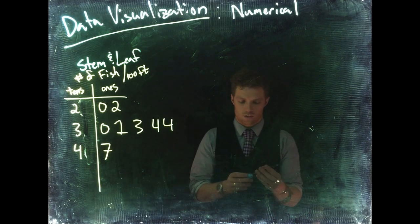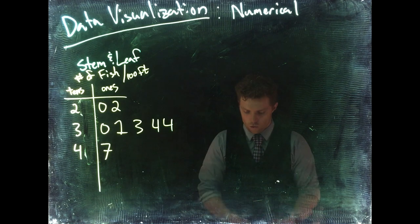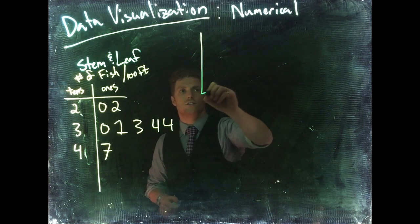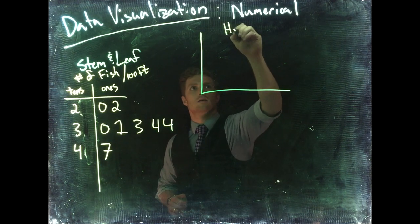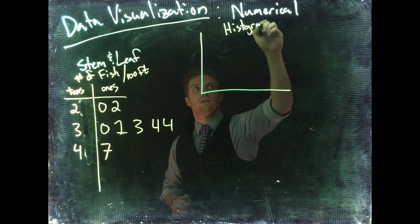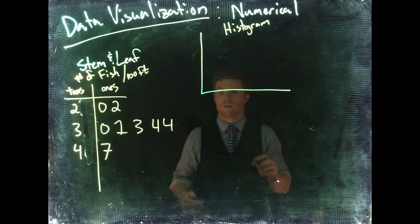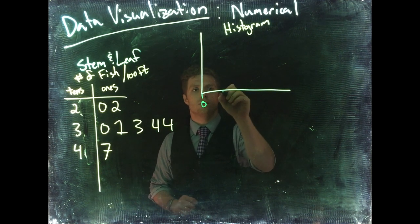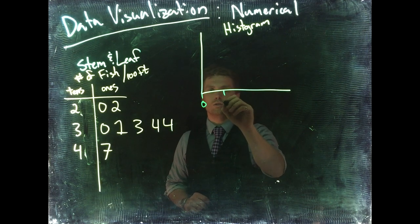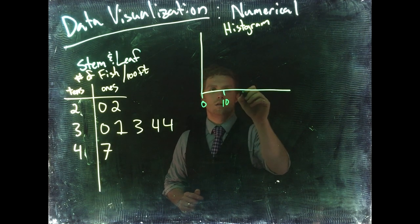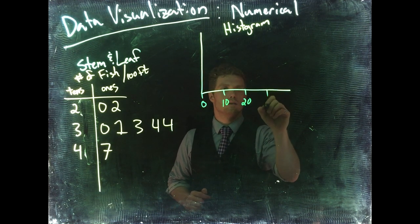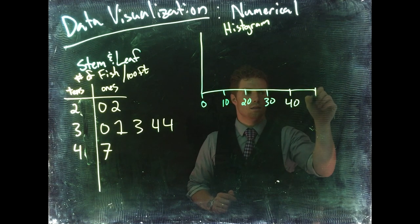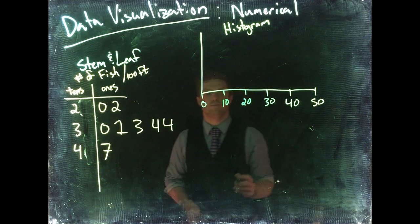And that would take us then to a histogram. So histograms do very much the same thing, but only more scalable than stem-and-leaf. So let's do this again for our fish. This time we'd say, okay, this is like 0, and then we could go to 10, 20, 30, 40, and then we could go to 50.